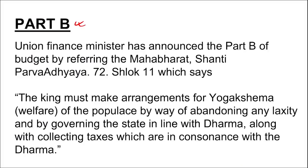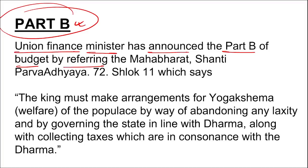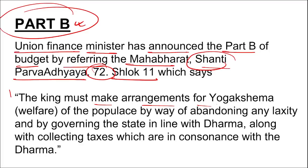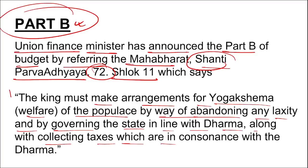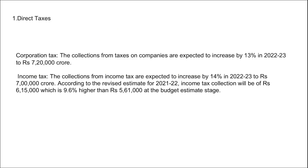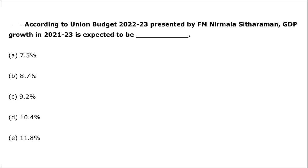The Finance Minister announced Part B of the budget by referring to the Mahabharata, Shanti Parva, Adhyay 72, Shlok 11: 'The king must make arrangements for the welfare of the populace by amending any laxity and governing the state in line with Dharma, along with collecting taxes in consonance with Dharma.' This is an important point — which shlok was cited: Shlok 11, Shanti Parva, Adhyay 72.